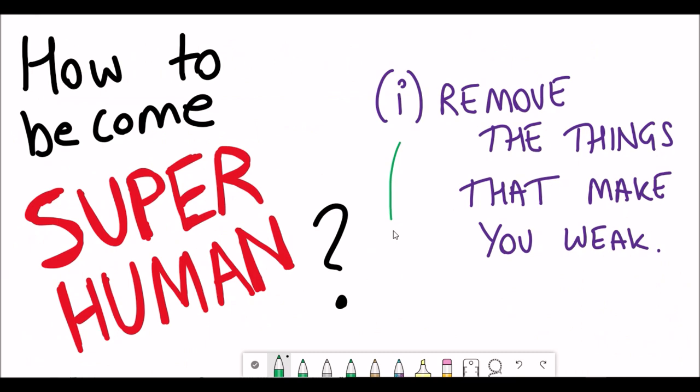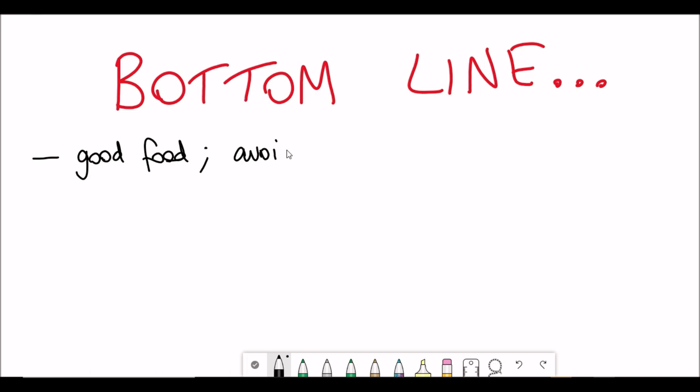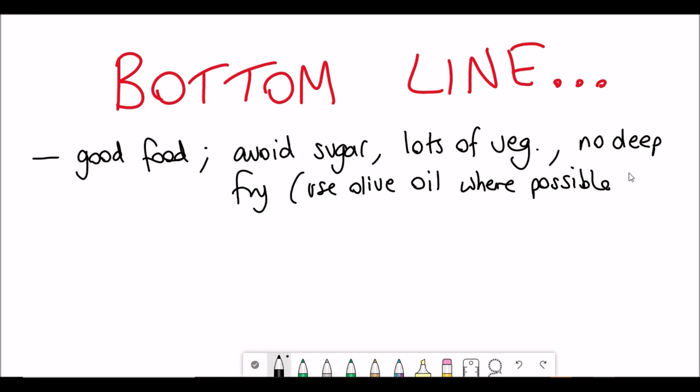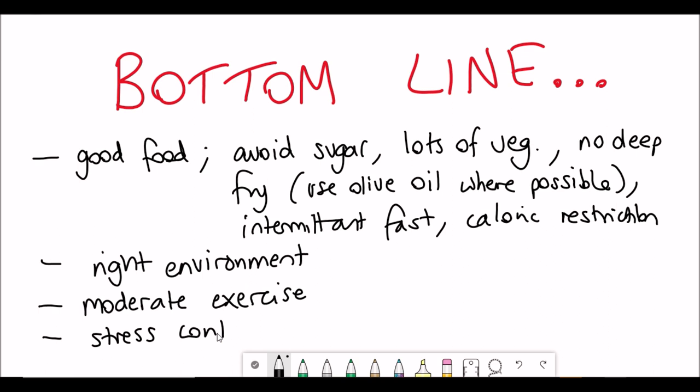How to become superhuman then? If we take a look at the bottom line, it's all about having good food, avoiding sugar, having lots of veg, don't deep fry foods, use olive oil when you can, caloric restriction, having the right environment, having moderate exercise, and trying to control your stress levels either through meditation or other ways.